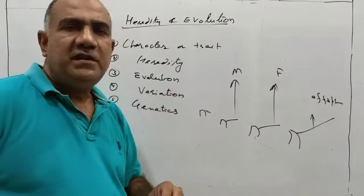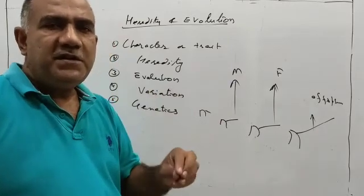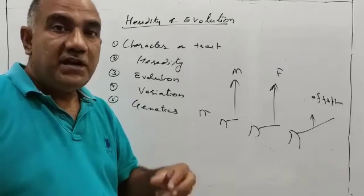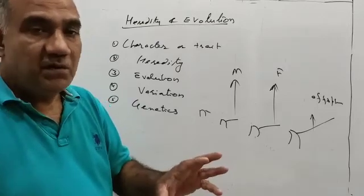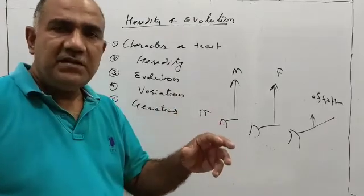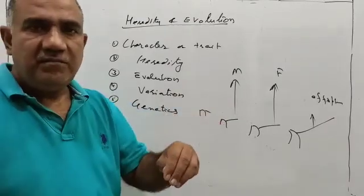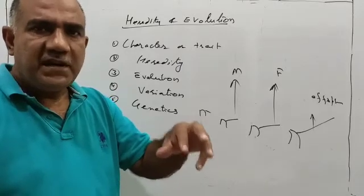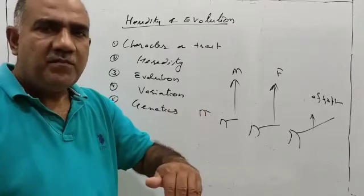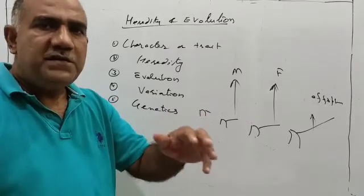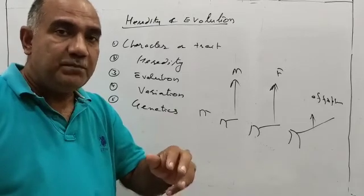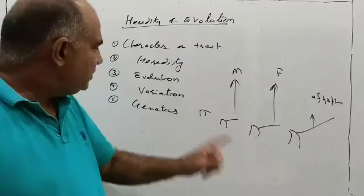This is very, very important. People confuse that variation means difference of characters or traits in a rat and a mouse, rat and an elephant. So it is not so. Variation is difference of characters or traits among the individuals of the same species. Difference of characters or traits among the individuals of the same species. And also it is difference of characters or traits among the offspring or siblings that are born to the same parents. So that is variation.